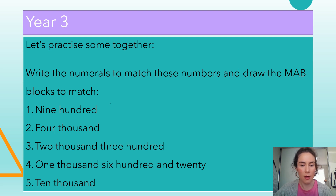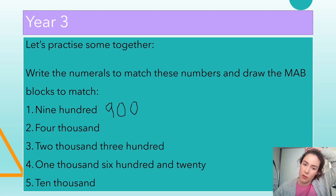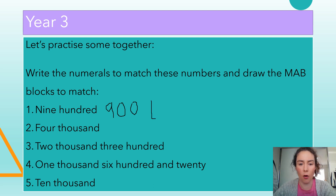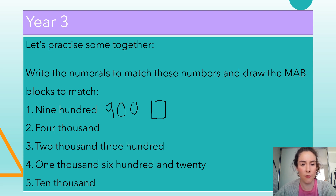Nine hundred: we have nine in the hundreds column, then a zero in the tens and a zero in the ones. For the MAB blocks, I would need to draw nine hundred squares. For four thousand: I've got a four in the thousands column, nothing in the hundreds, nothing in the tens, and nothing in the ones. For the MAB blocks I would draw four cubes.